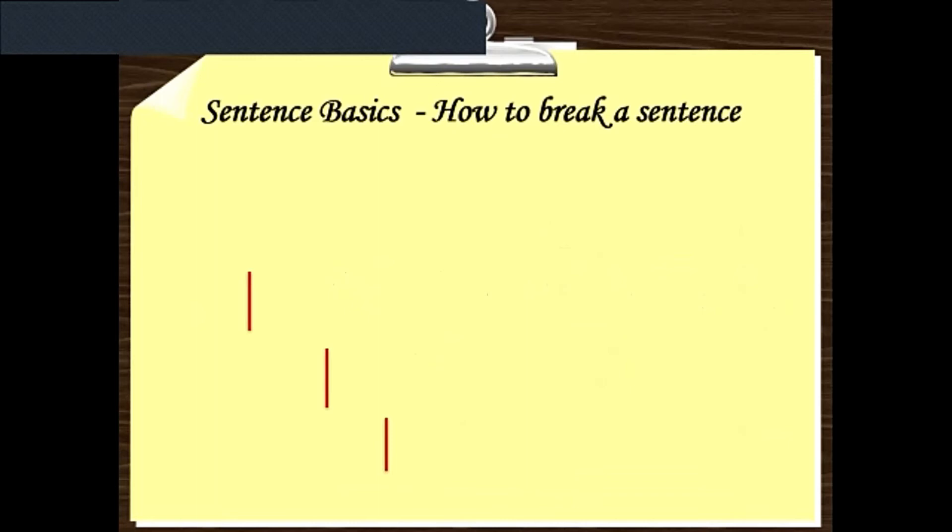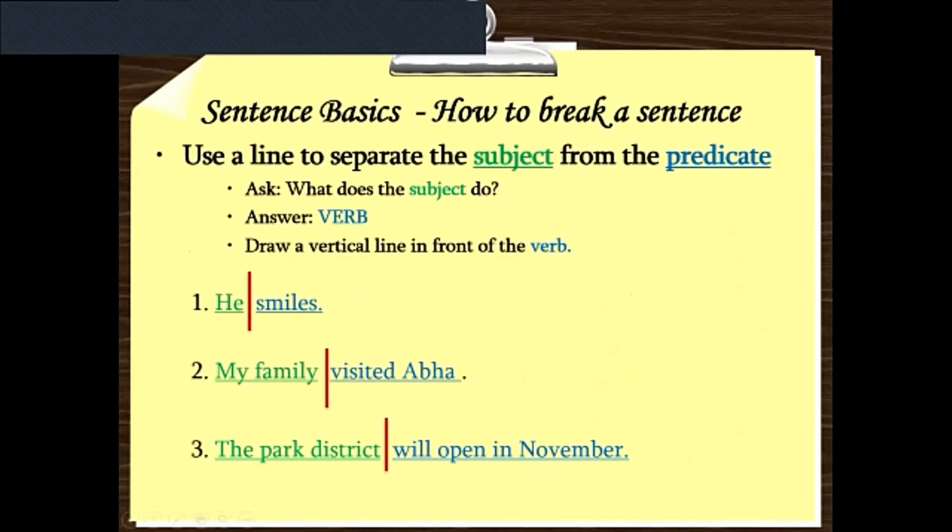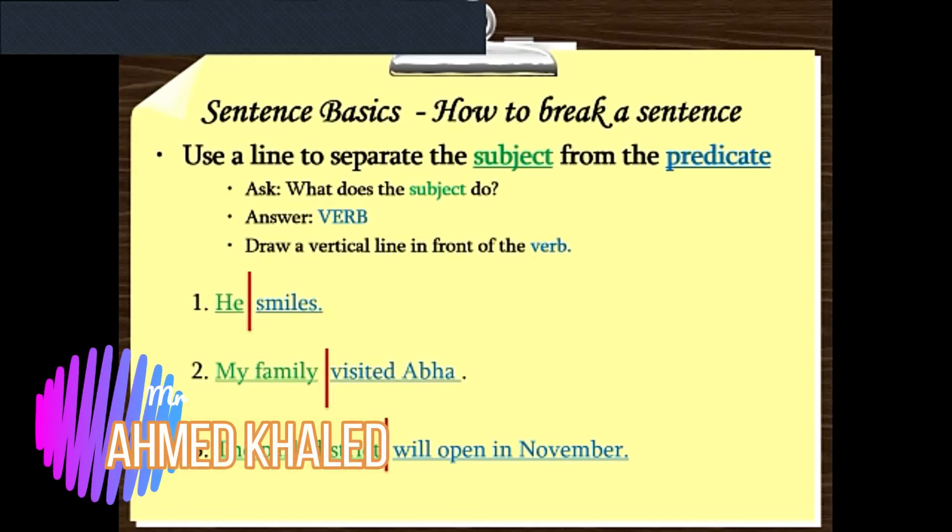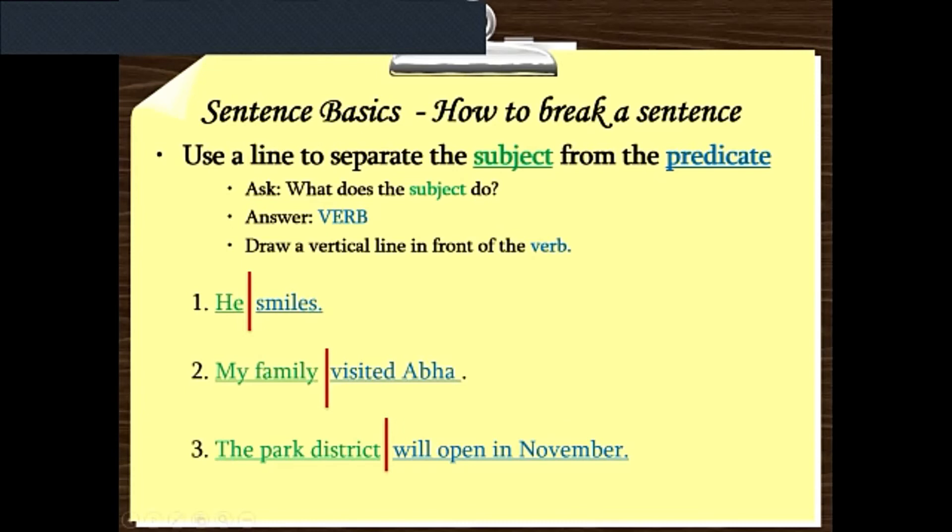Now, how to divide the sentence? Here we are using a line to separate the subject from the predicate. To know the subject, I have to ask myself, what is the subject here? And to know the predicate, what does the subject do? So here, the first one: 'He smiles.' It will be, the subject will be 'he,' and the predicate will be 'smiles.'